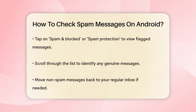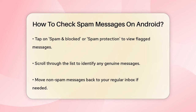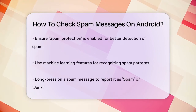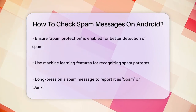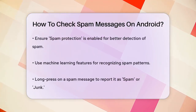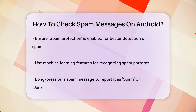This might vary slightly depending on your app, but it should be something similar. Tap on Spam and Blocked or Spam Protection and you'll see a list of messages that have been flagged as spam. Here, you can scroll through the messages and check if any of them are genuine and not spam. If you find a message that isn't spam, you can move it back to your regular inbox.